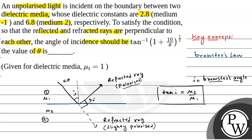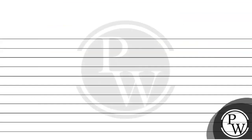In the question, we have this setup and need to find i. Here it's given that the dielectric constant of medium 1, k1, is 2.8, and k2 is 6.8.